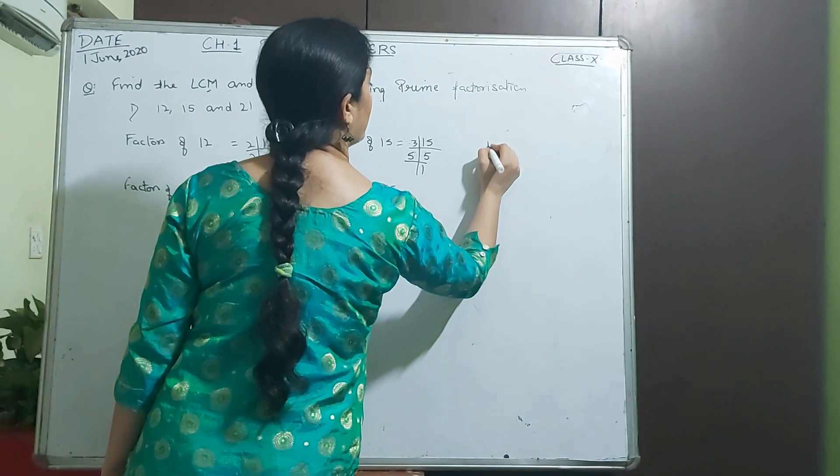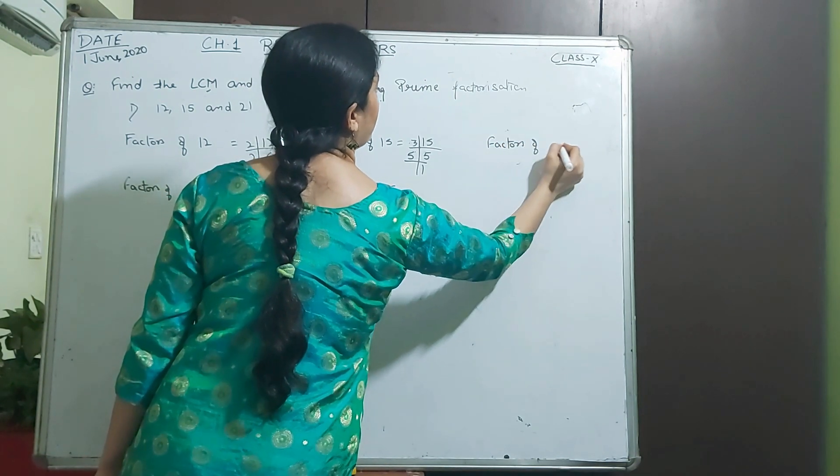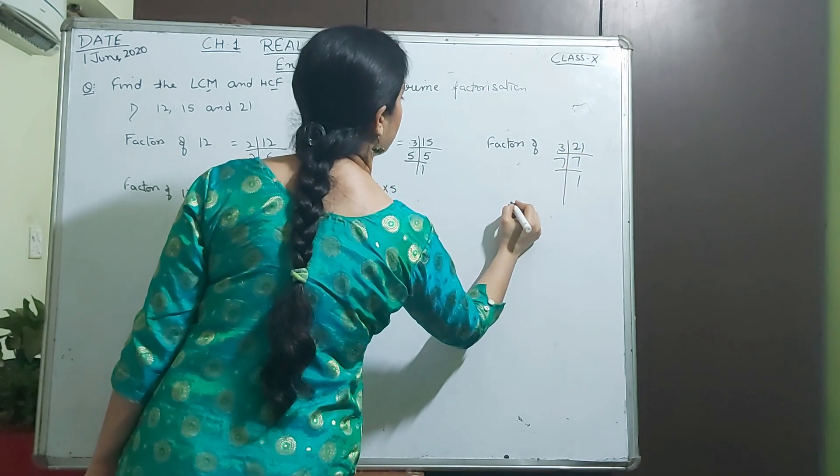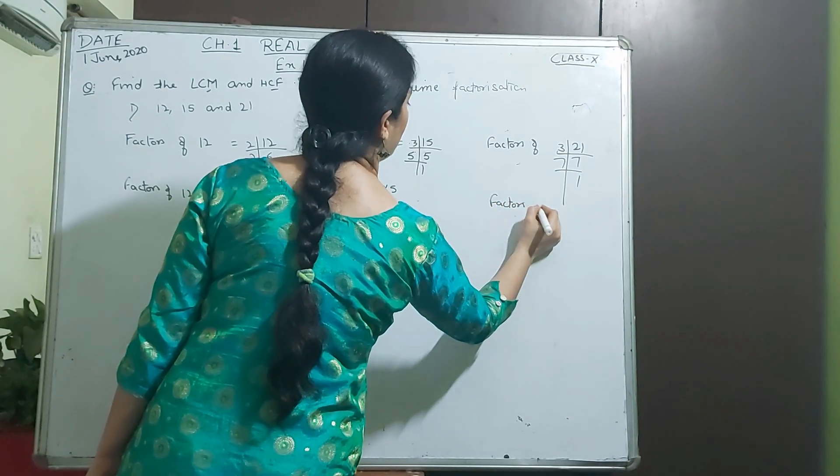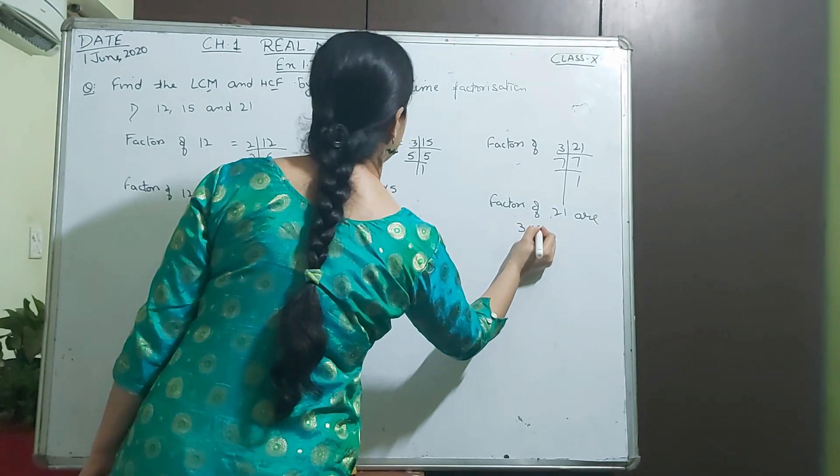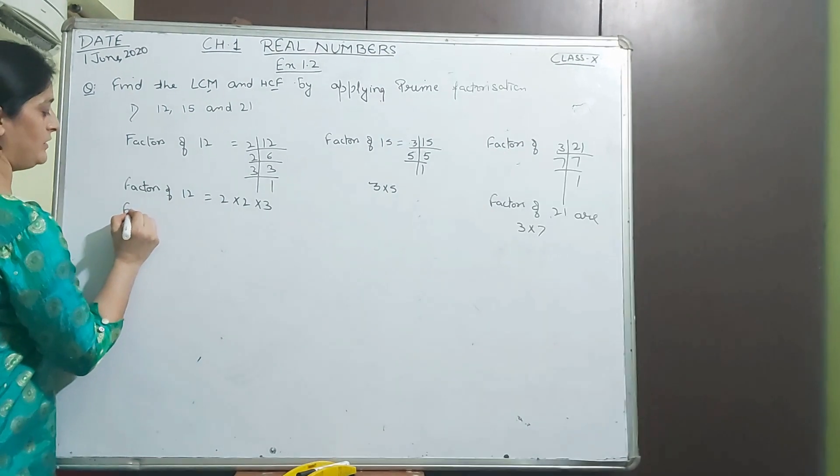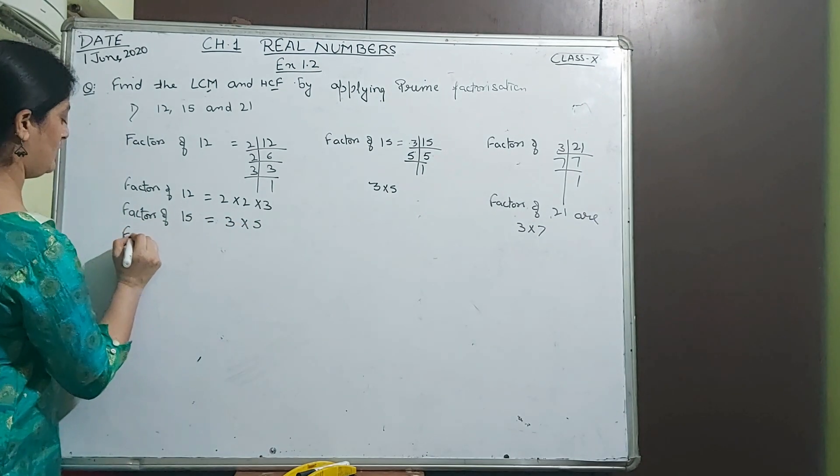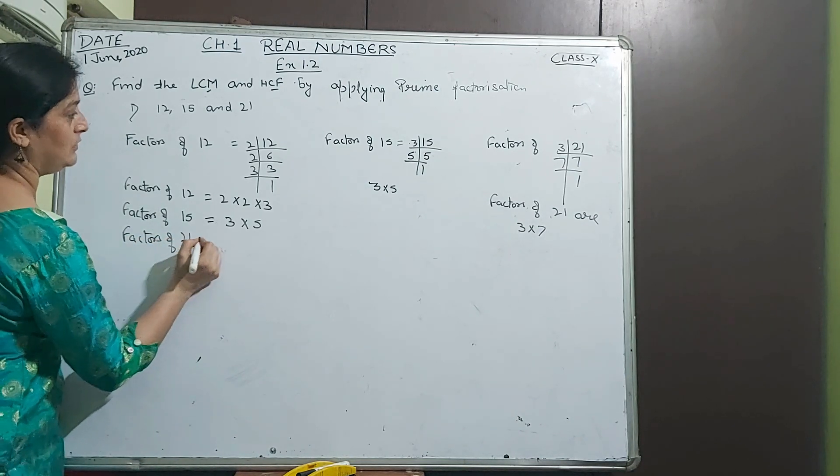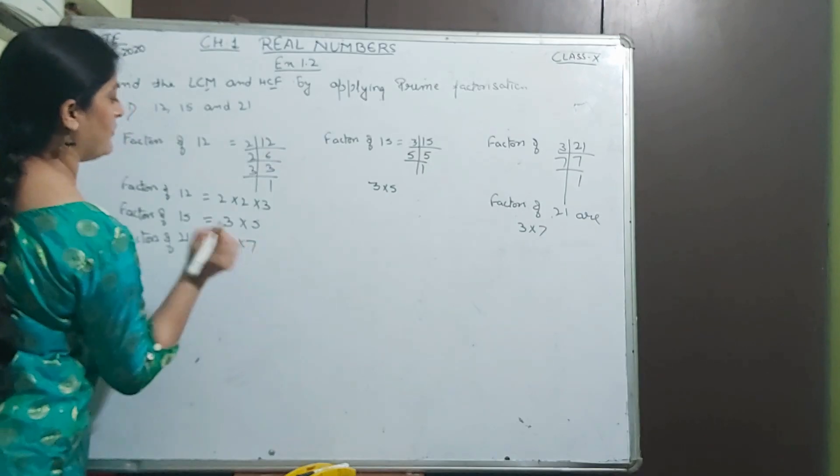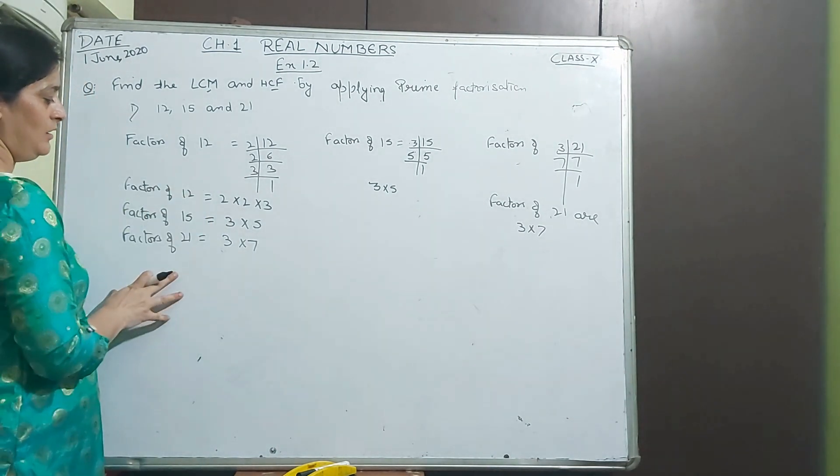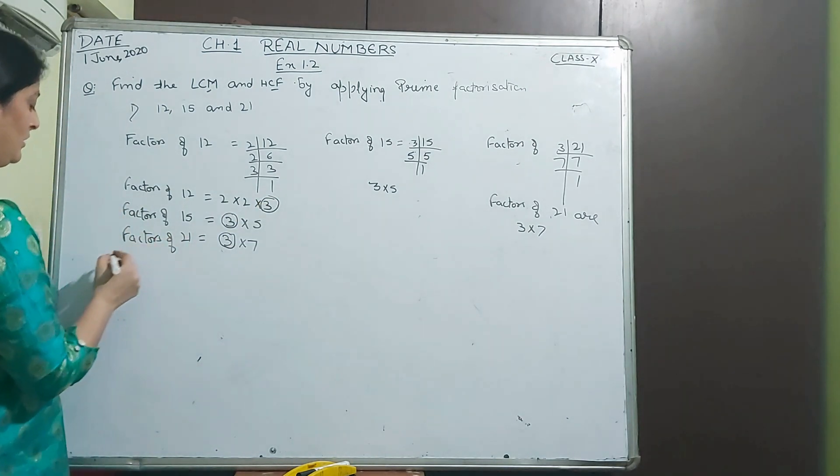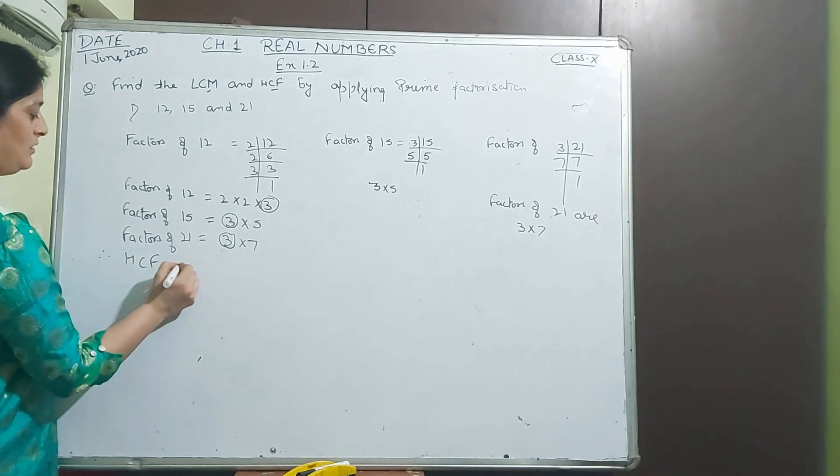Next 21. Factors of 21: 3 times 7. Factors are 3 into 7. Factors of 12: 2 into 2 into 3. Factors of 15: 3 into 5. Factors of 21: 3 into 7. Which number is common among these 3 numbers? 3 is common, comes in all numbers. Therefore HCF is 3.